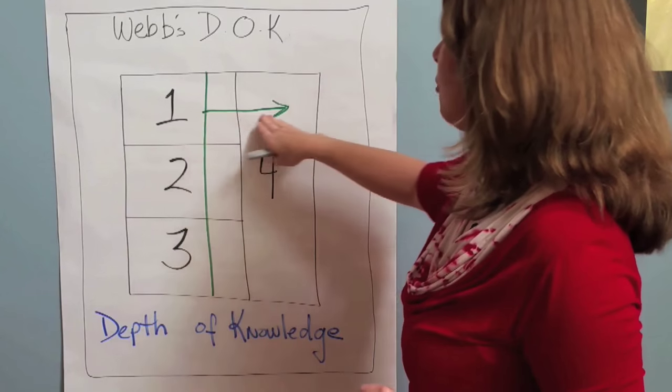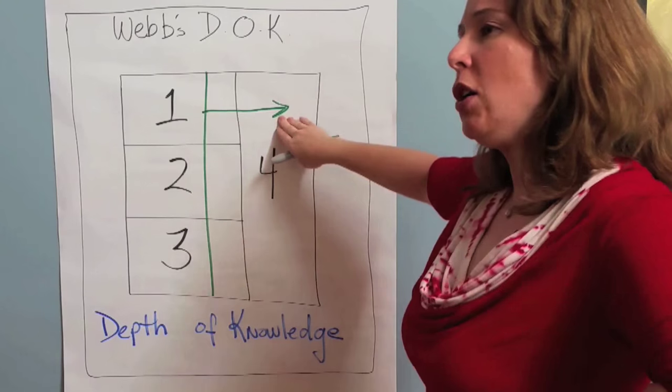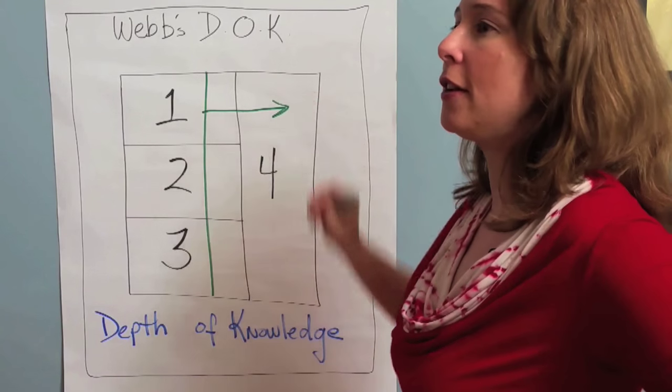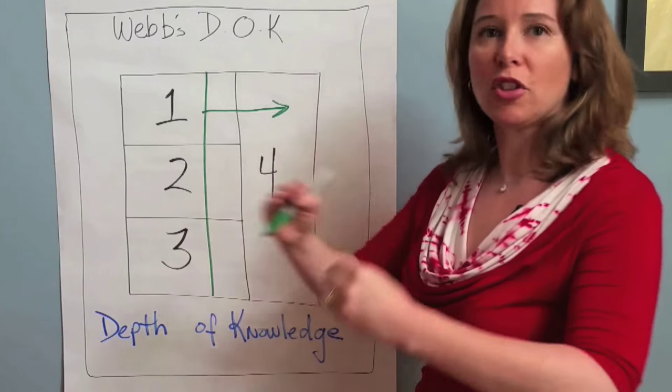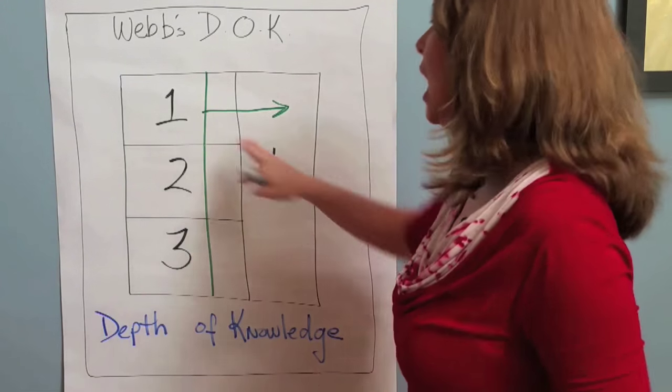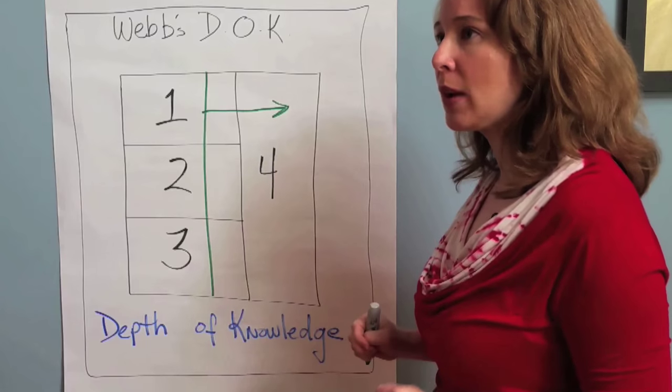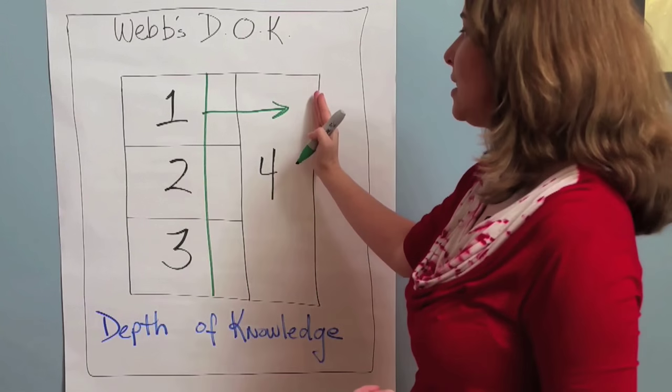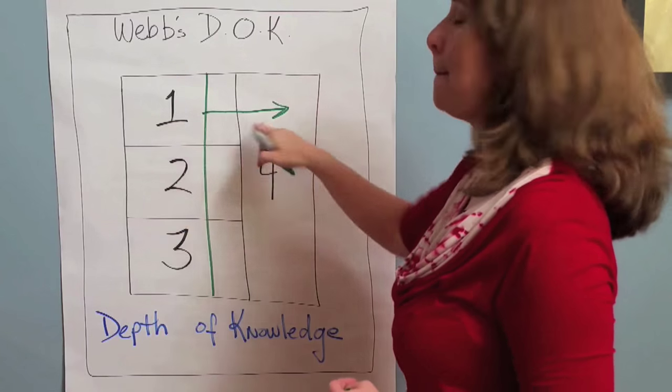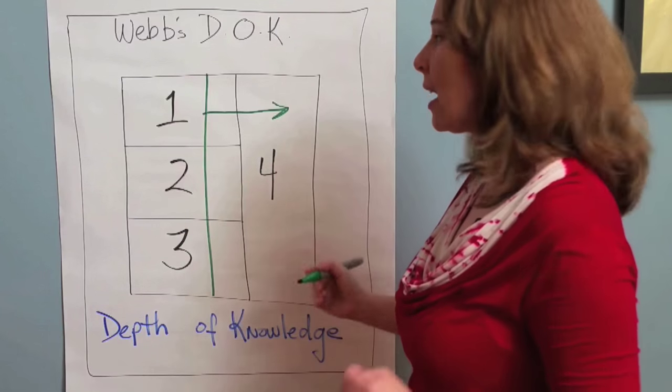So now a DOK 4 question might be, how can I design a healthier cookie? So now I'm not dealing with chips. I don't have chocolate. I'm not dealing with the chocolate chip cookie design. I might be having kale cookies. Okay? Completely different concept, gone sideways. So that's a DOK 4, or design a better cookie. How would I design a better cookie?